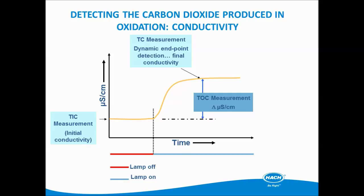Conductivity-based detection methods work by sensing an increase in ion concentration, which is attributed to the increased presence of bicarbonate and carbonate ions created from the oxidation of organic compounds. In this graph, conductivity of the unoxidized water sample is measured. The UV lamp then comes on to oxidize organics into carbon dioxide, which causes the conductivity to increase. Conductivity of the oxidized water sample is then measured to produce the TOC measurement value.